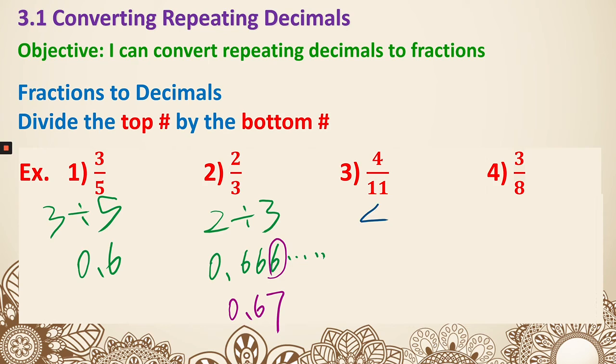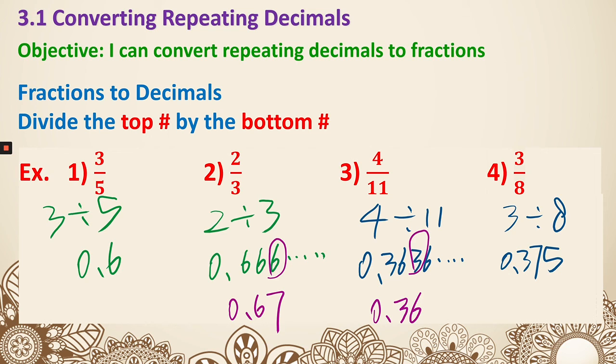Next, 4 over 11. Type in your calculator as 4 divided by 11. That's going to be 0.3636 repeating. If the question asks you to round, we look at the third digit as a 3, we round it down, so it's 0.36. Last one, 3 over 8, type it as 3 divided by 8. That gives you 0.375. That's everything for section 3.1. Thank you.